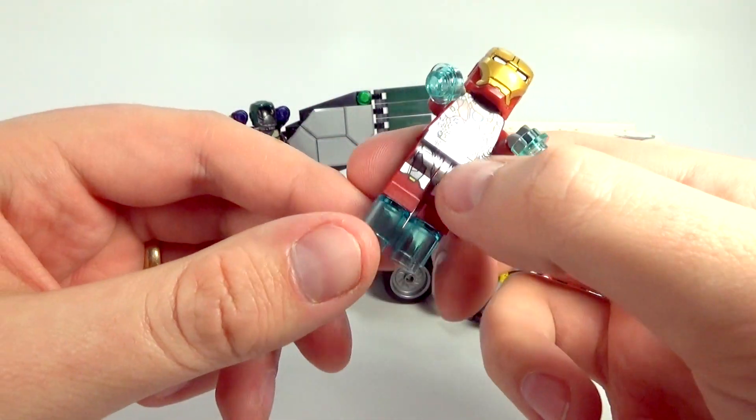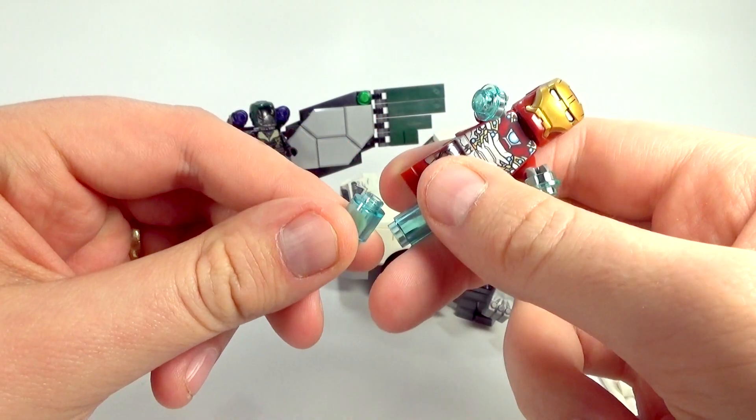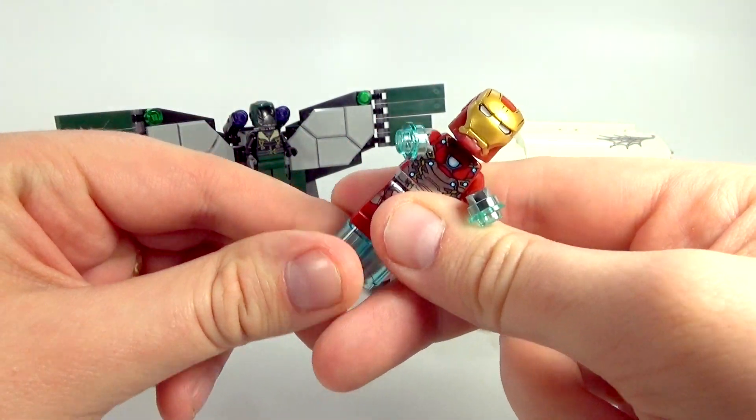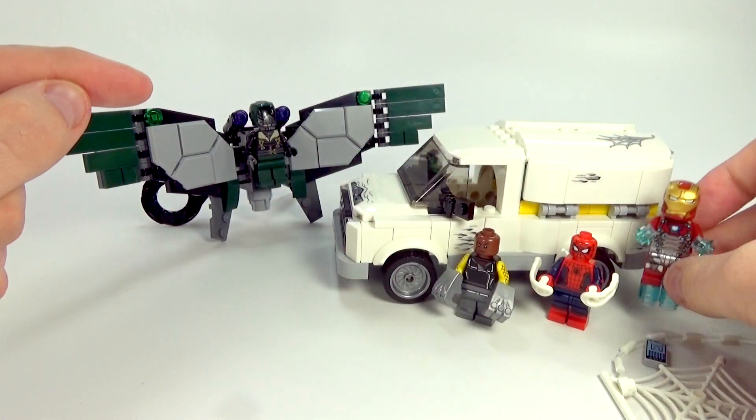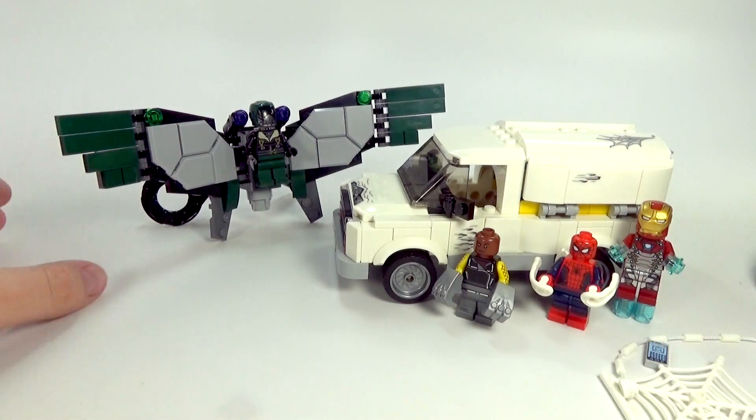And of course, he does come with his little studs on the bottom that you can use for jets and pulsar beams and stuff. So, that's pretty rad.